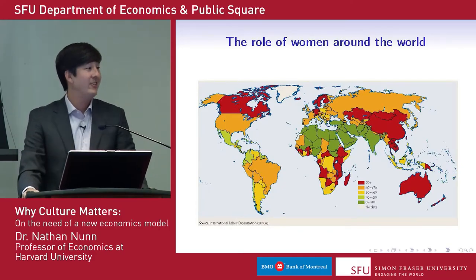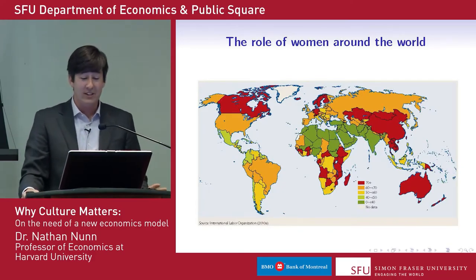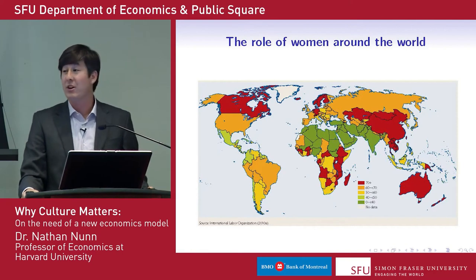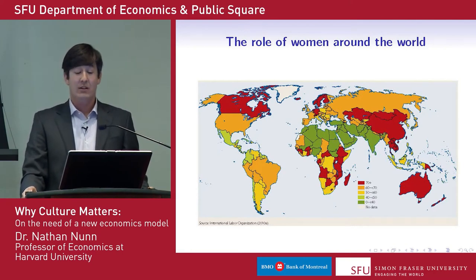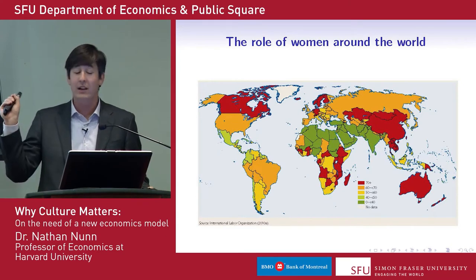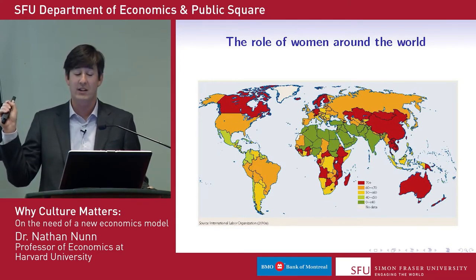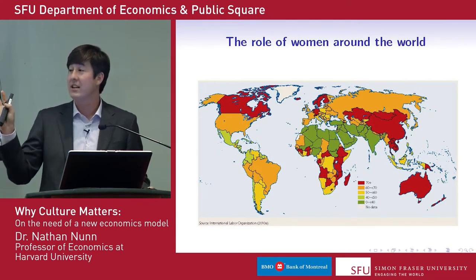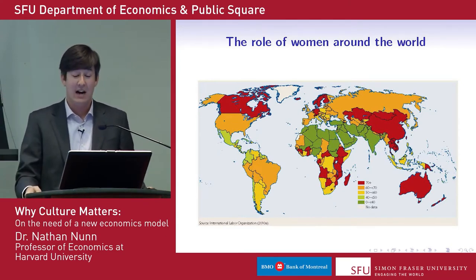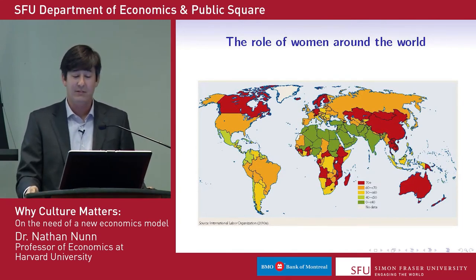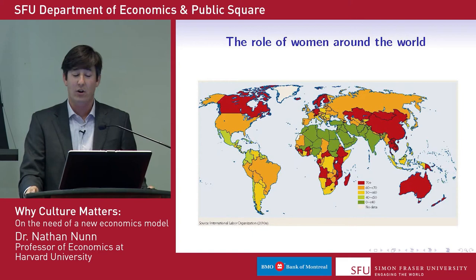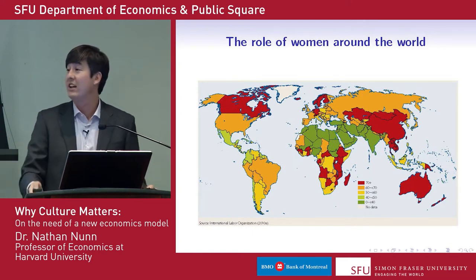So another one: gender. Everyone's always interested in this — the role of women around the world. This is super fascinating because we see huge heterogeneity. This is female labor force participation around the world. The colors indicate differences: red means above 70 percent, green is zero to 40 percent. So huge heterogeneity.